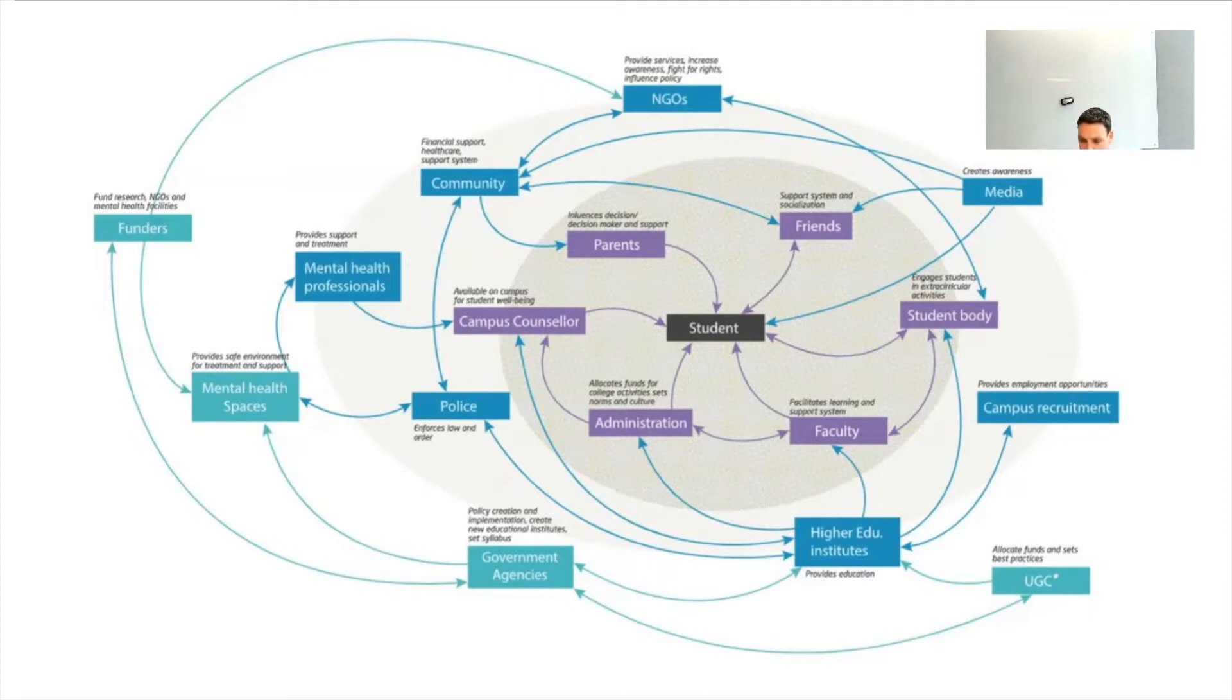We can see that they're interrelated - we've got those connections between them with arrows saying what's affecting what. Campus counselors are affecting students, administration is affecting faculty, faculty is affecting students, students are affected by their friends and in turn are affecting their friends. Community is affecting NGOs which is affecting student body which ties back to students. This is a system - we can see there the basic elements, the different factors affecting parts of this system, and the interrelationships between them.